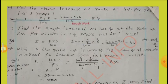Next: Find the simple interest on Rs.700 at 4% per year for 3 years. Using I equal to PTR by 100: 700 into 3 into 4 by 100. By cancellation, we get I equal to Rs.84.